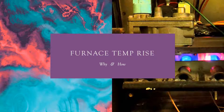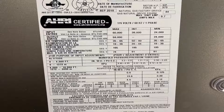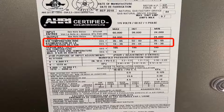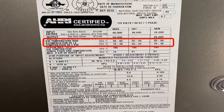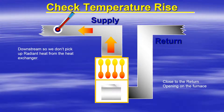Furnace temperature rise — why and how. On all furnace data tags you will find a section with the air temperature rise parameters. In this particular example, this is a modulating furnace, so we have an air temperature rise parameter for maximum, intermediate, and minimum furnace operation. The temperature rise should be taken for all three, as all three have different gas pressure settings.